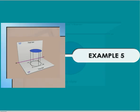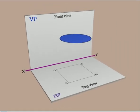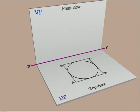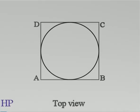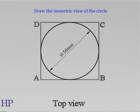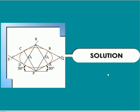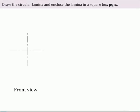Example problem. In this problem, the task is to draw the isometric view of a circle of diameter 50 mm using the 4-center method. The figure also shows the given circle as the top view, enclosed in a box.